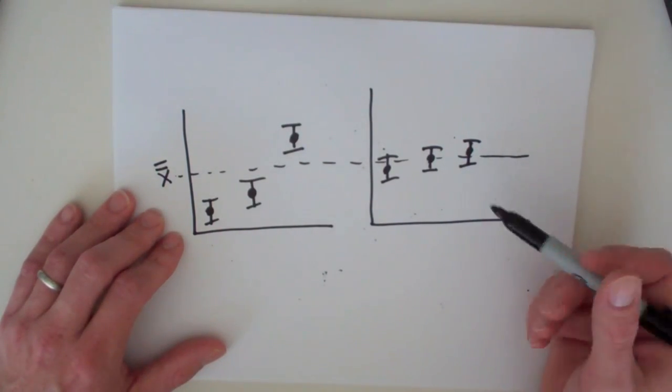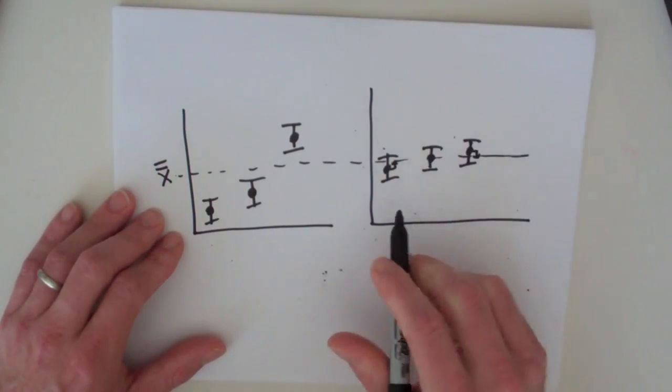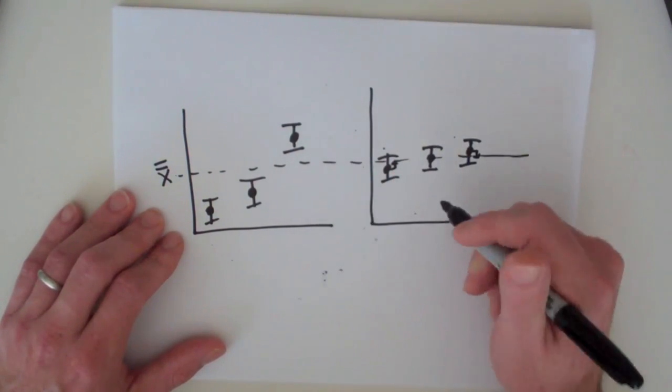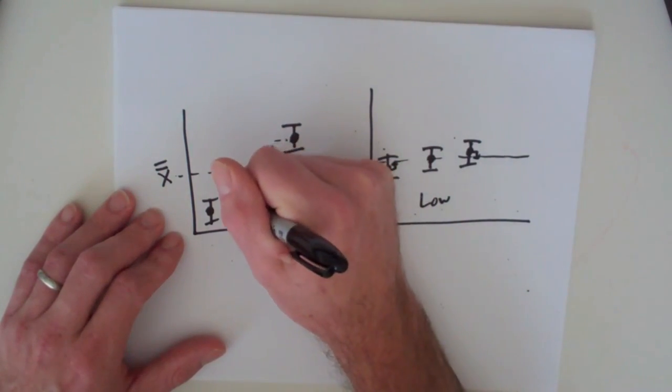All three of these groups, the grand mean is the same, but the departure from the mean in each of these cases is really small. So, low among group variation. Here, this is high among group variation.